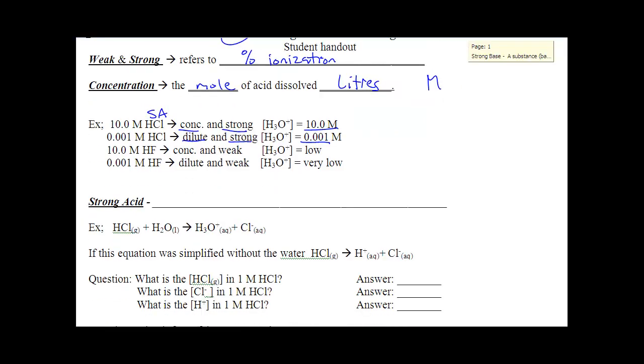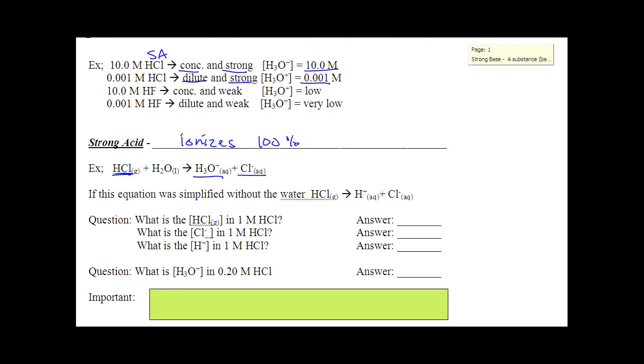So, specifically, a strong acid ionizes 100%. So, 100% of this HCl will turn into these products. All of that HCl will ionize. All of that HCl will react with the water. So, just to put that into perspective, what exactly are we talking about?